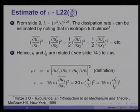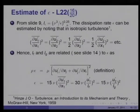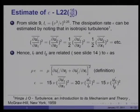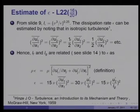To estimate lε, recall from slide 9 that Kolmogorov related lε to (ν³/ε)^0.25. Therefore lε can only be estimated if we can estimate ε, the magnitude of the rate of kinetic energy dissipation. It can be estimated using properties of isotropic turbulence from Heinz's book 'Turbulence: An Introduction to its Mechanism and Theory' (McGraw-Hill, 1959). One property is that (du1'/dx1)² = (du2'/dx2)², but equals only half of (du1'/dx2)² = (1/2)(du2'/dx1)², and so on.